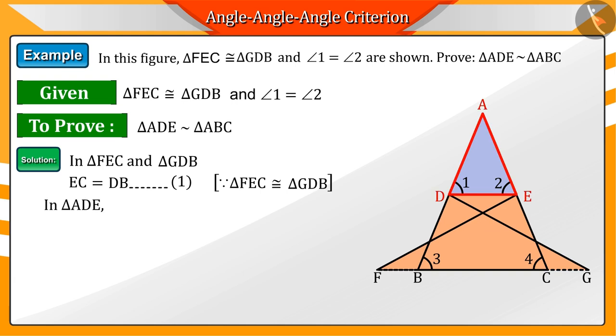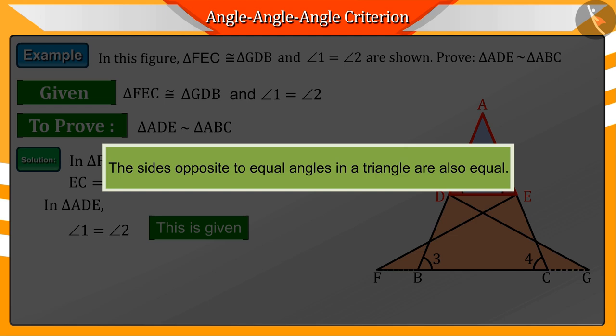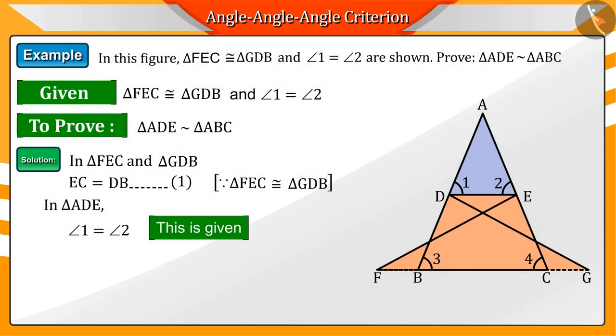Now if we look at triangle ADE, we get to know that angles 1 and 2 are the same. You would remember that the sides opposite to equal angles in a triangle are also equal. Hence, sides AD and AE would be equal.